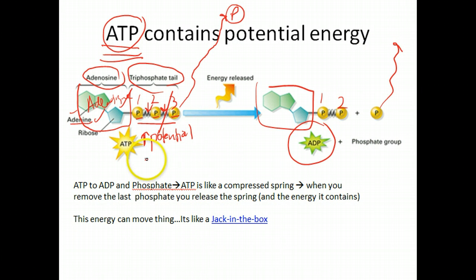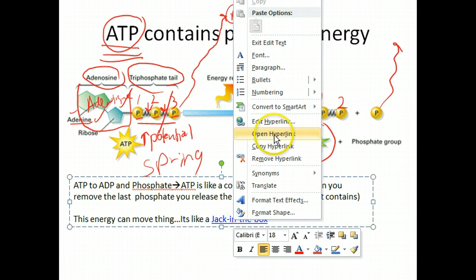So I want you to think of this as a spring. And basically, when you cleave off this last phosphate, you're basically releasing the spring. It's going from high potential energy to kinetic. That spring movement would be kinetic. And there'd be a lot of energy stored in there.